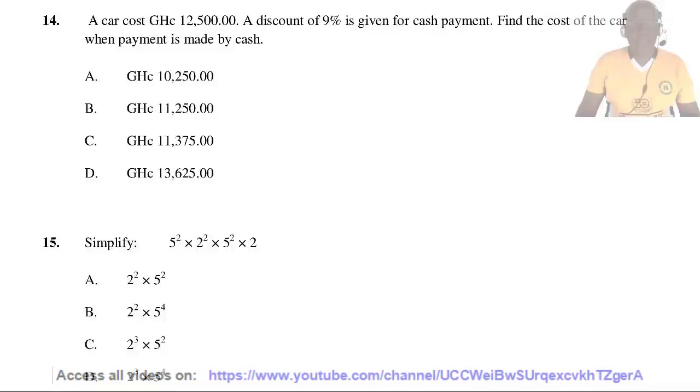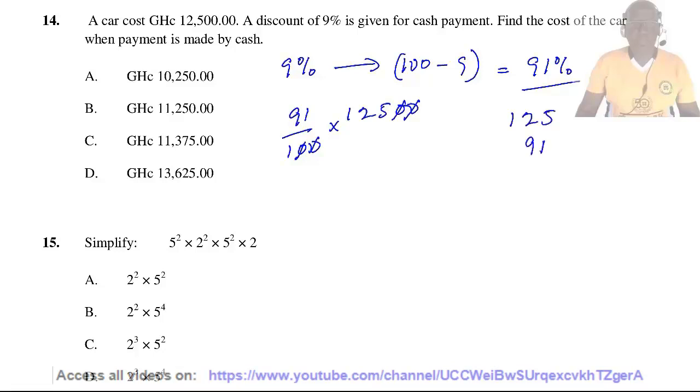Question 14. A car costs 12,500 cedis. A discount of 9% is given for cash payment. Find the cost of the car when payment is made by cash. The amount paid is 100% minus 9%, which equals 91%. So 91% of 12,500. We have 125 times 91: 5 carry 4, 18 plus 4 is 22 carry 2, 9 plus 2 is 11. So 11,375. The answer is C.